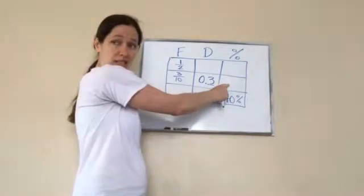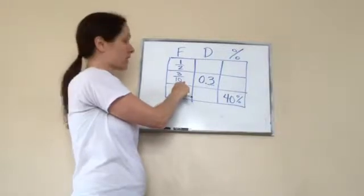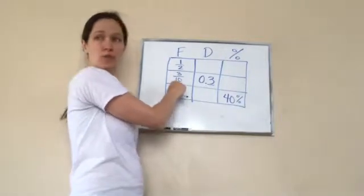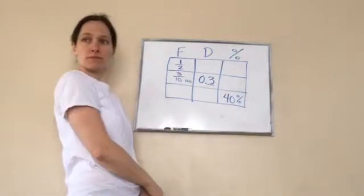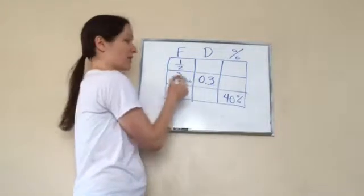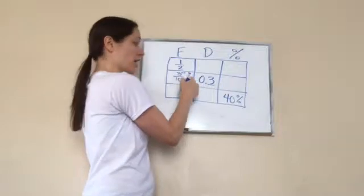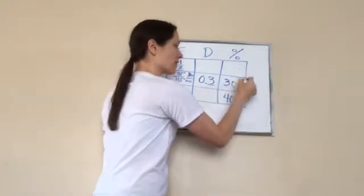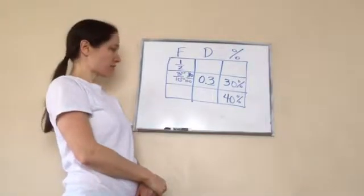Now in order to make something a percent, it has to have 100 on the bottom. So how would I make this 100 from 10 to 100? 10 times 10. So if I multiply this by 10, then what do I do? 30 over 100, very good. So 30 over 100 is 30 percent.